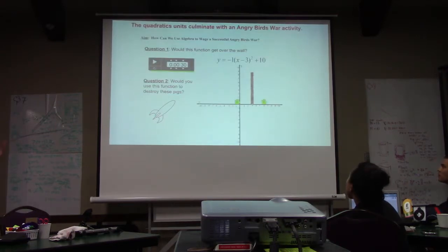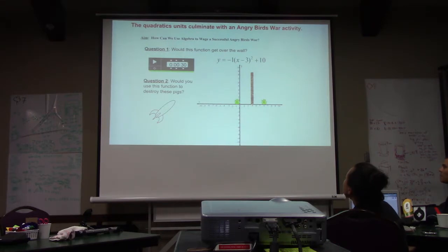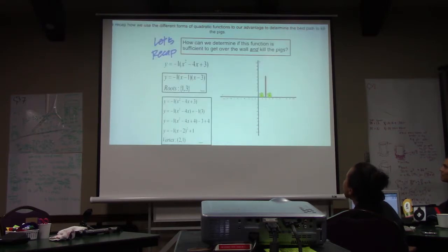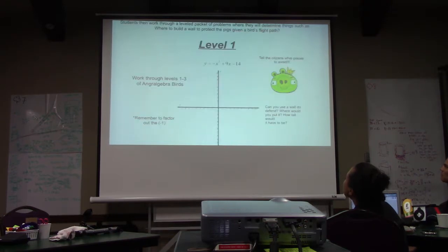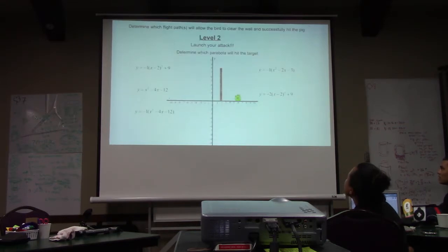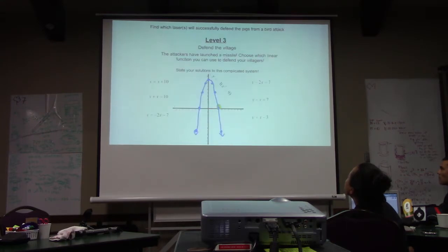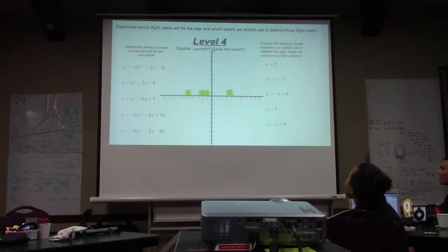By the way, this is taught over a period of about six weeks. The quadratics unit culminates with an Angry Birds war activity. We recap everything we've done, and students use the different forms of quadratic functions to their advantage to determine the best path to kill the pigs. They work through a level packet of problems to determine such things as: where to build a wall to protect the pigs given a bird's flight path; which flight path will allow the bird to clear the wall and successfully hit the pig; which lasers will successfully defend the pigs from a bird's path; and which flight paths will hit the pigs and which lasers to use as defense.